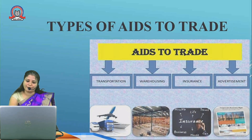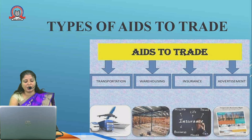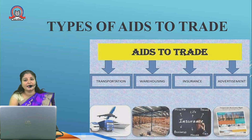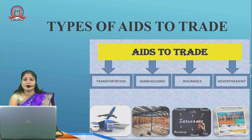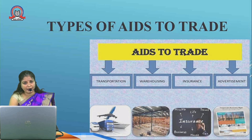Now, aid to trade. There are various aids to trade. Transportation creates place utility — with the help of transportation, we can transport goods from one place to another, providing the right quantity at the right place. Warehousing stores goods in the godown; it is a storage house. Warehousing creates time utility. There is a time gap between production and consumption, so whatever goods the producer produces, the wholesaler stores them in the warehouse, and whenever the retailer requires them, transportation moves the goods from warehouse to retail shops.